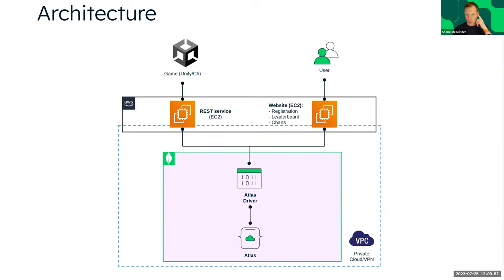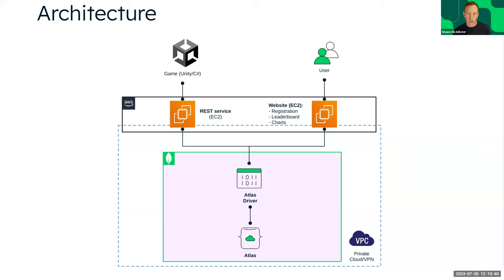This is the architecture — just an illustration of how things come together. We treat the Unity game as a black box on the left. It talks back through a REST service on AWS EC2, through the Atlas driver back to Atlas. On the right, when used at an event, users register and get their name — that's used for the leaderboard and to show the charts at the end of the day. We work with AWS leveraging EC2 and Private Cloud, connecting Atlas to the AWS instance.